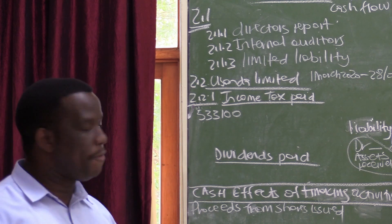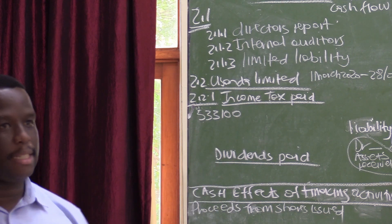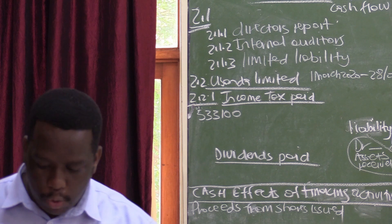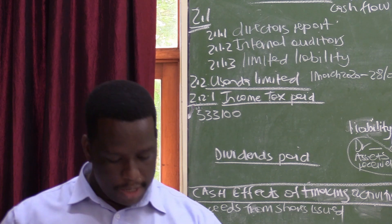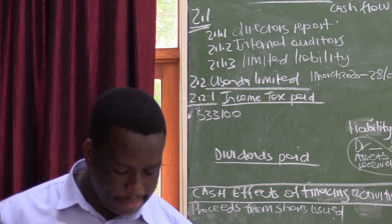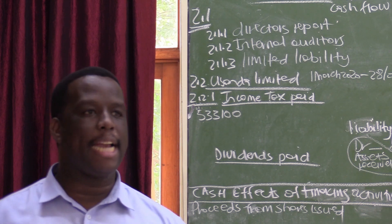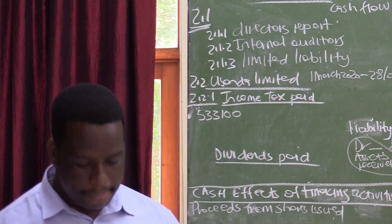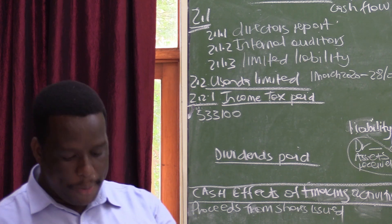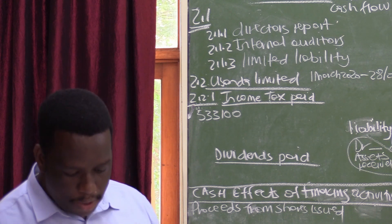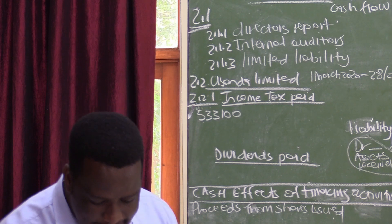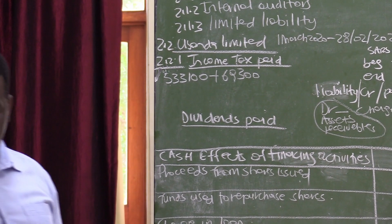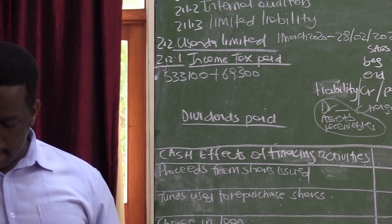Our income tax for the current financial year is 533,100. But remember, we want to calculate the exact amount paid to SARS, because it may happen that the tax is 533,100 but we did not pay that full amount. Looking at information B, the SARS income tax account for the beginning and the end is reflected under liability — which applies our formula. At the beginning of the year we were owing SARS 69,300.